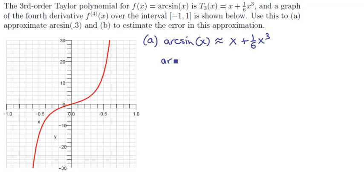That means arcsin(0.3) is going to be approximately 0.3 + (1/6)(0.3)³. So if we work that out, we're going to get 0.3³ = 0.027 over 6.